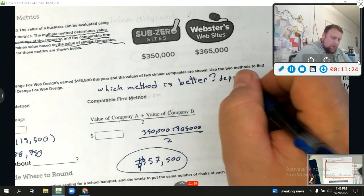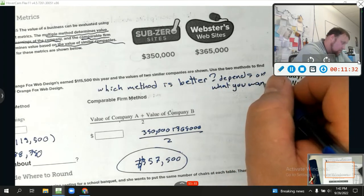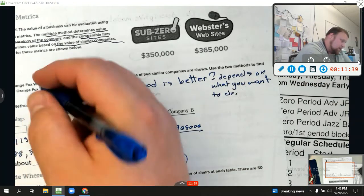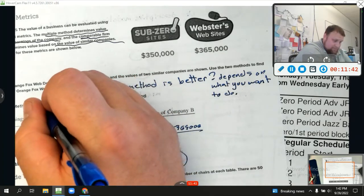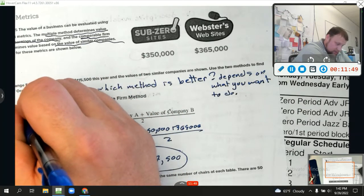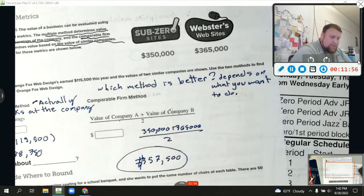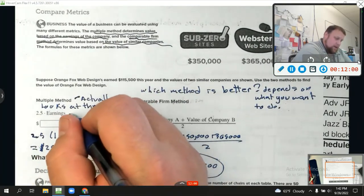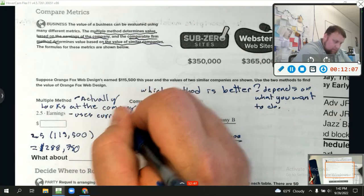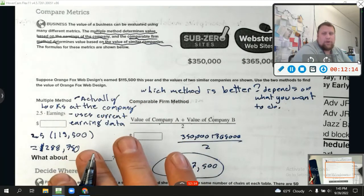It uses current earning data. So I would say if you want a more realistic view of what's going on in your company, use your own company's data. However, if I were trying to sell this data and I want to sell my company or I wanted it to look as good as it possibly could and I knew that other companies had a better evaluation, I would probably use the comparable firm method to give the value of my company the best possible value. Because what is a comparable firm? It really, it makes you look better if other companies have higher value.